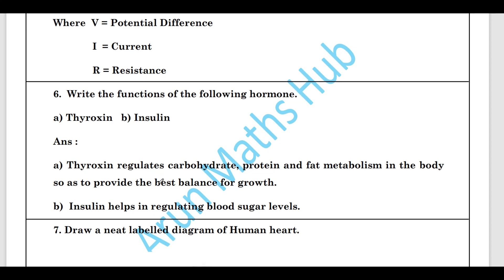Write the functions of the following hormones: thyroxine and insulin. Thyroxine regulates carbohydrate, protein, and fat metabolism in the body, and provides the best balance for growth. Iodine is the element used to synthesize thyroxine. Insulin helps in regulating blood sugar levels in the blood.